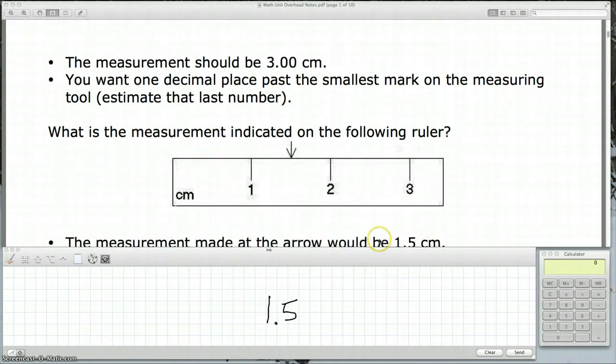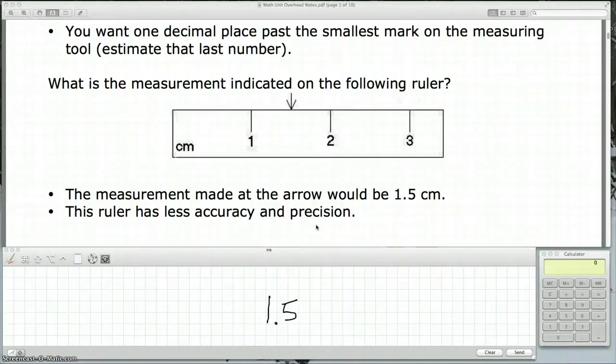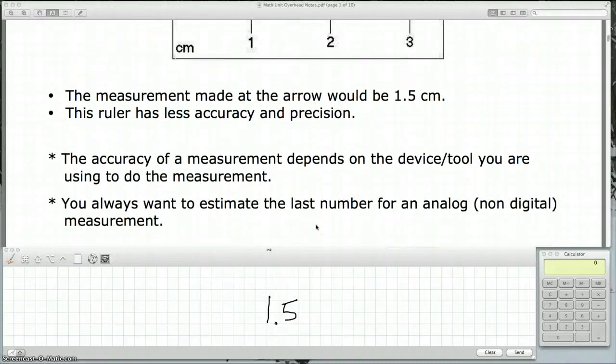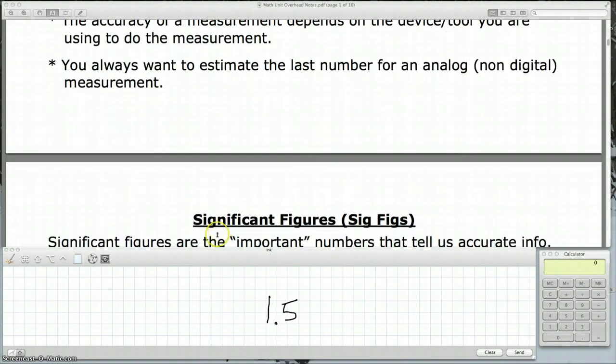And that's it for measurement. A couple things I want to point out. This last ruler has less accuracy and less precision. We'll talk about those two concepts later. A couple key points to remember: The accuracy of a measurement depends on the device or tool you're using to do the measurement. So if you have a better ruler, you get a better measurement. And you always want to estimate the last number for an analog, that is non-digital, measurement. Analog meaning it doesn't give you a digital readout. You're not reading it from a little screen. So that's it for this lesson. The next lesson will cover significant figures.